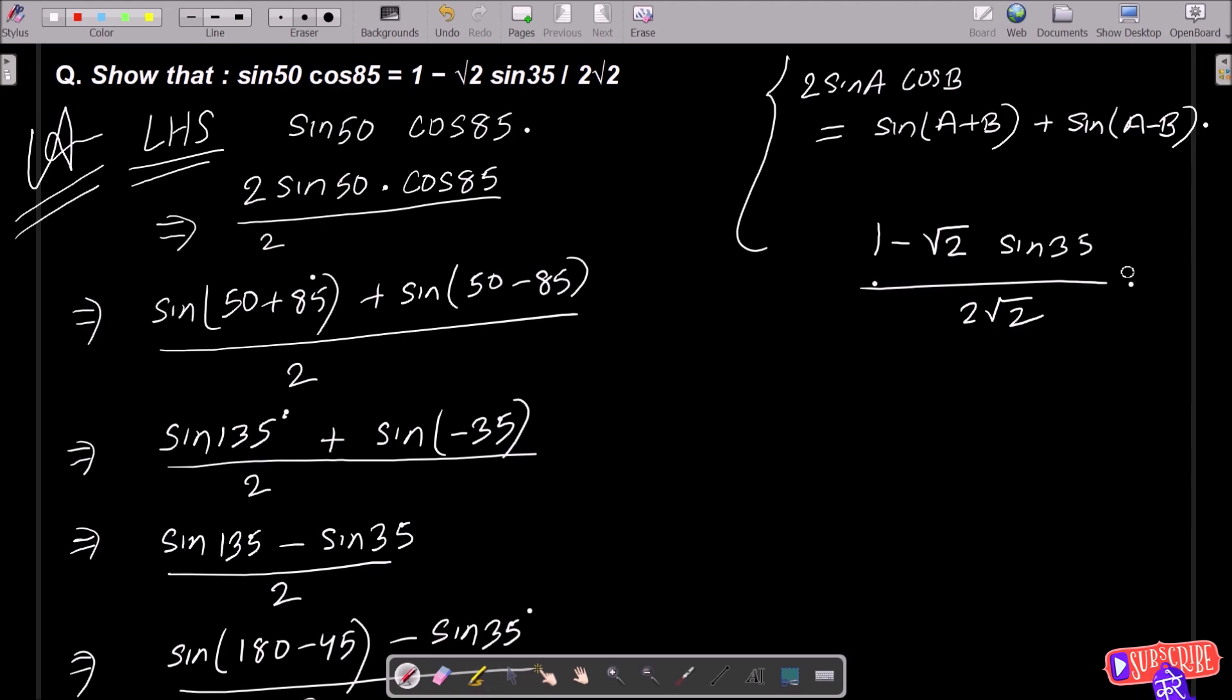So here let's take the LHS, left hand side, sin 50 into cos 85. Then after, you need to multiply with the numerator and denominator with 2. So this is now 2 sin A into cos B. This is based on this formula.